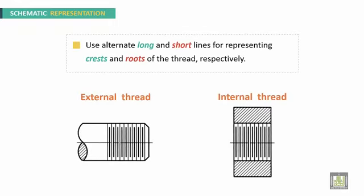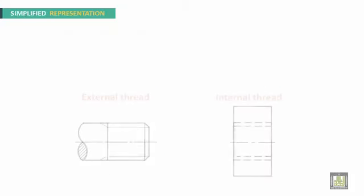For the schematic representation, alternate long and short lines are used to represent crests and roots of the thread respectively. Long lines represent crests and short lines represent roots. The same applies to the internal thread. The distance between them is the pitch.